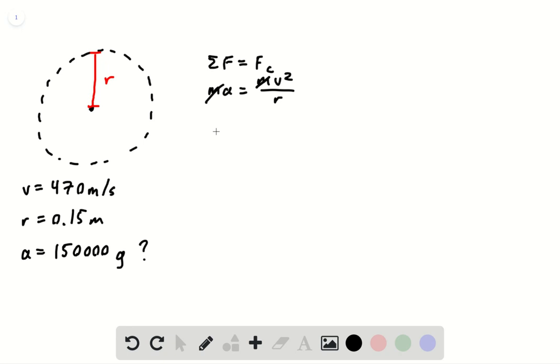We can cancel the mass so that we get acceleration equals velocity squared over r. We can express it in units of g, so we divide by 9.81 meters per second squared.